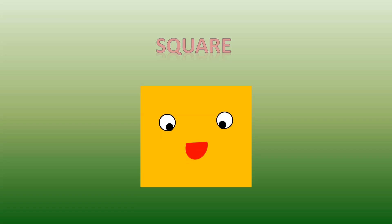What is the shape of this? This is a square. How many sides does the square have? Four equal sides. Yes, and all the sides are equal.